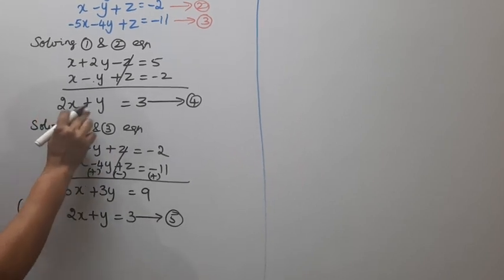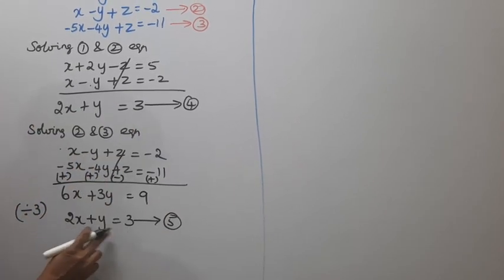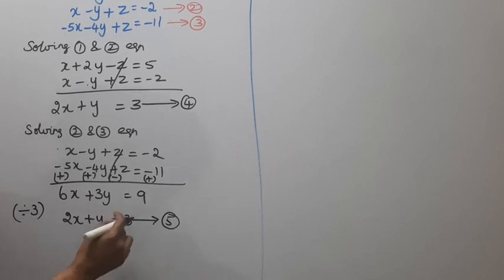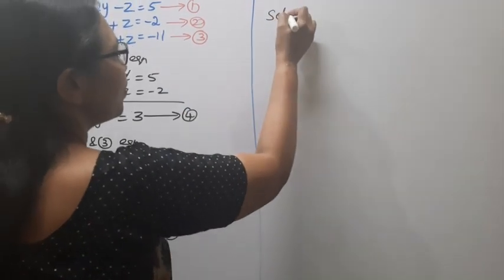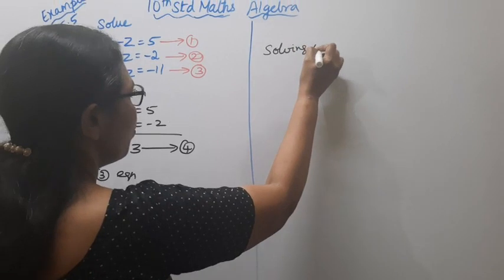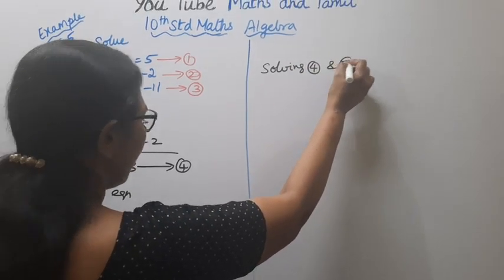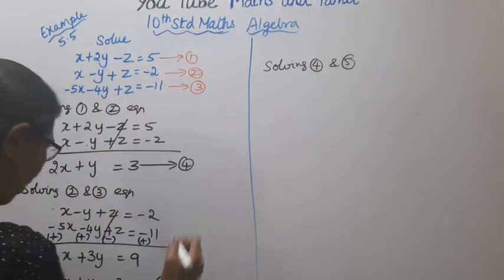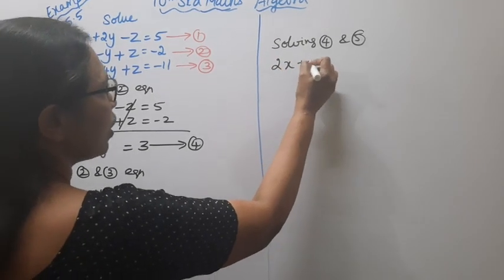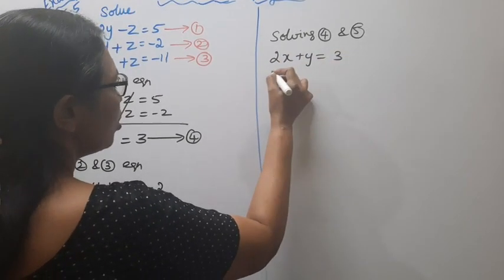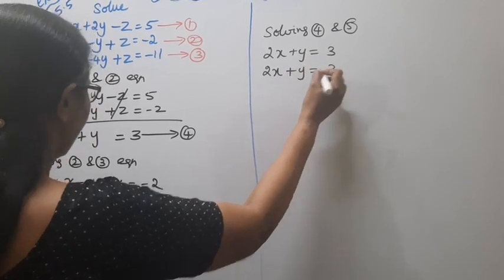Fourth equation: 2x plus y equals 3. Fifth equation: 2x plus y equals 3. Now solving equations 4 and 5 together: 2x plus y equals 3, and 2x plus y equals 3.